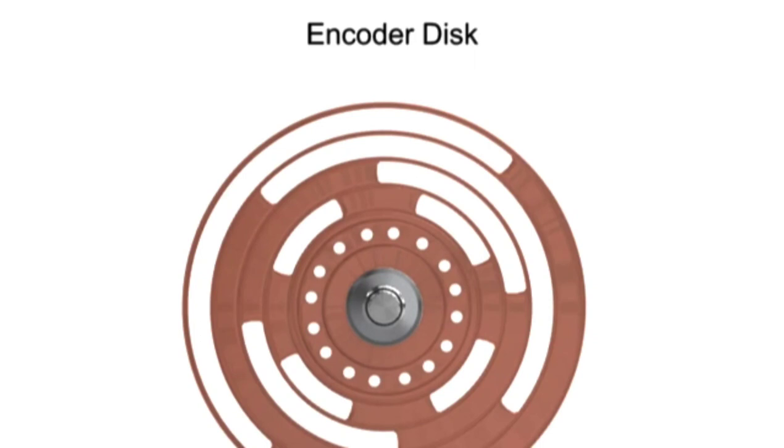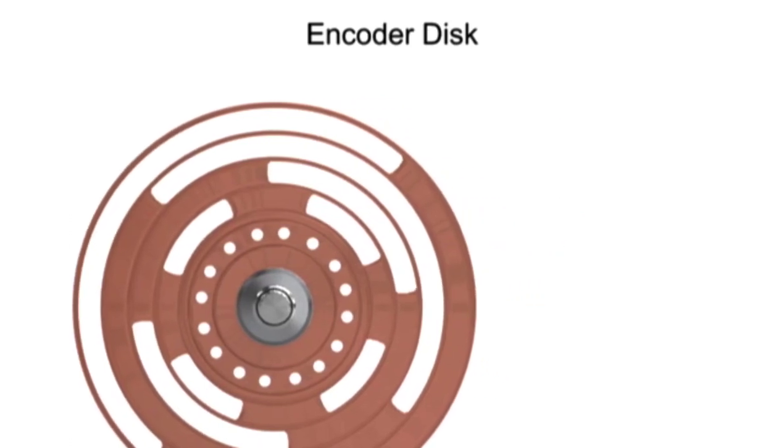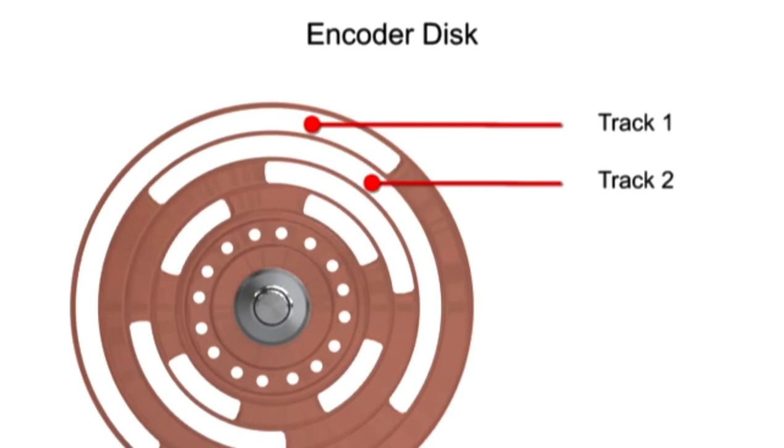The encoder disk consists of a series of opaque and transparent tracks mounted to a rotating shaft. The tracks of the disk are arranged concentrically around the center of the shaft.